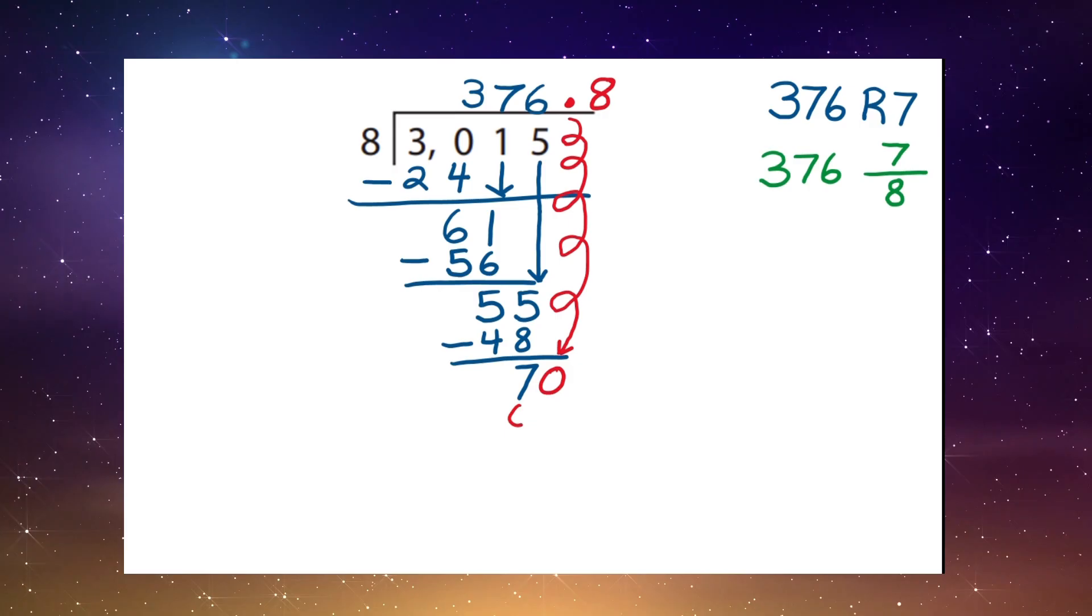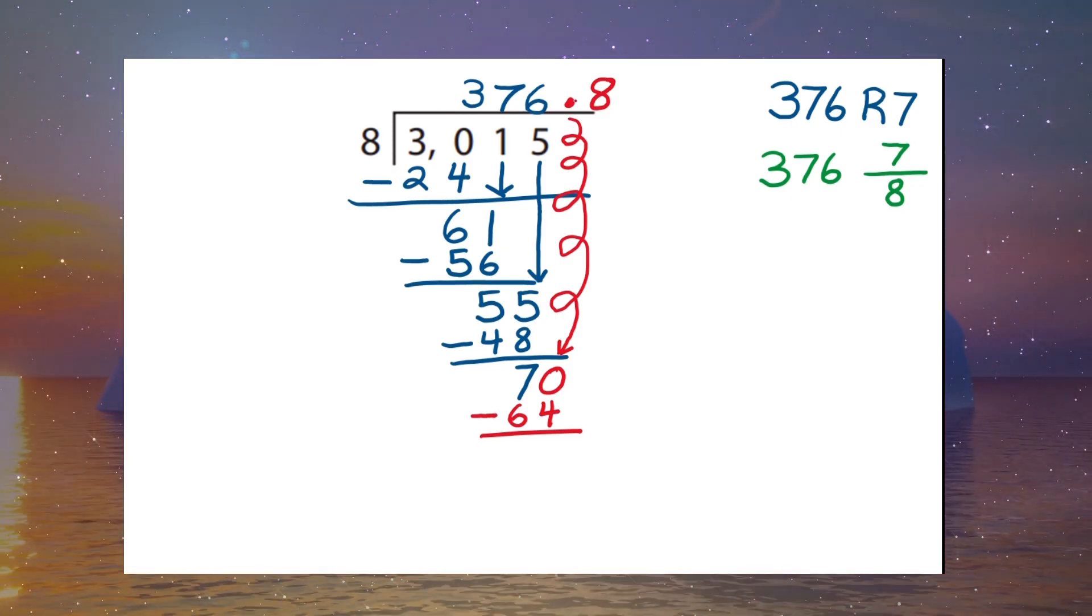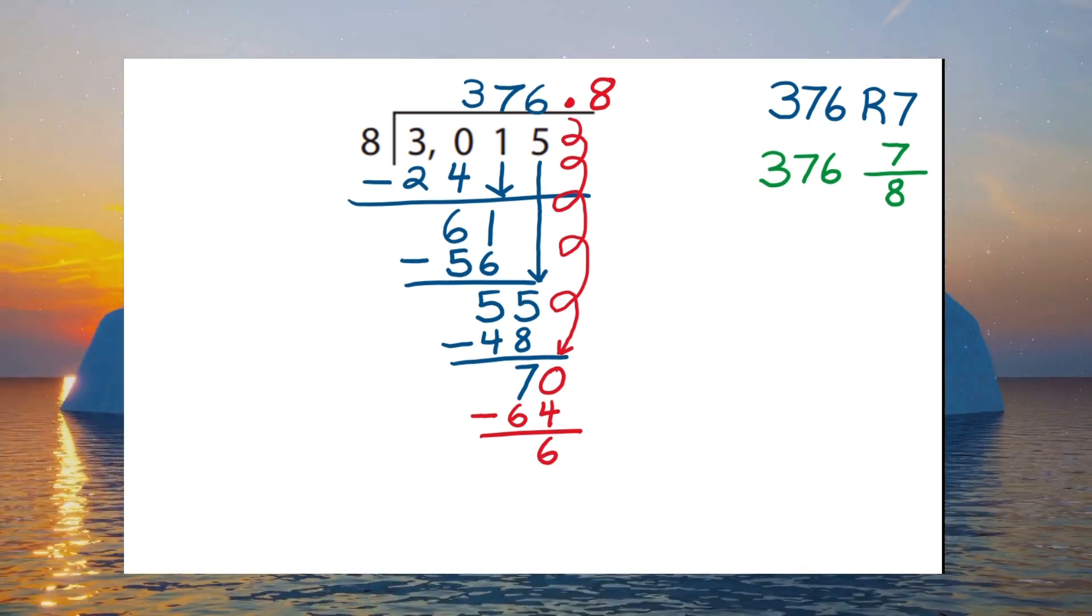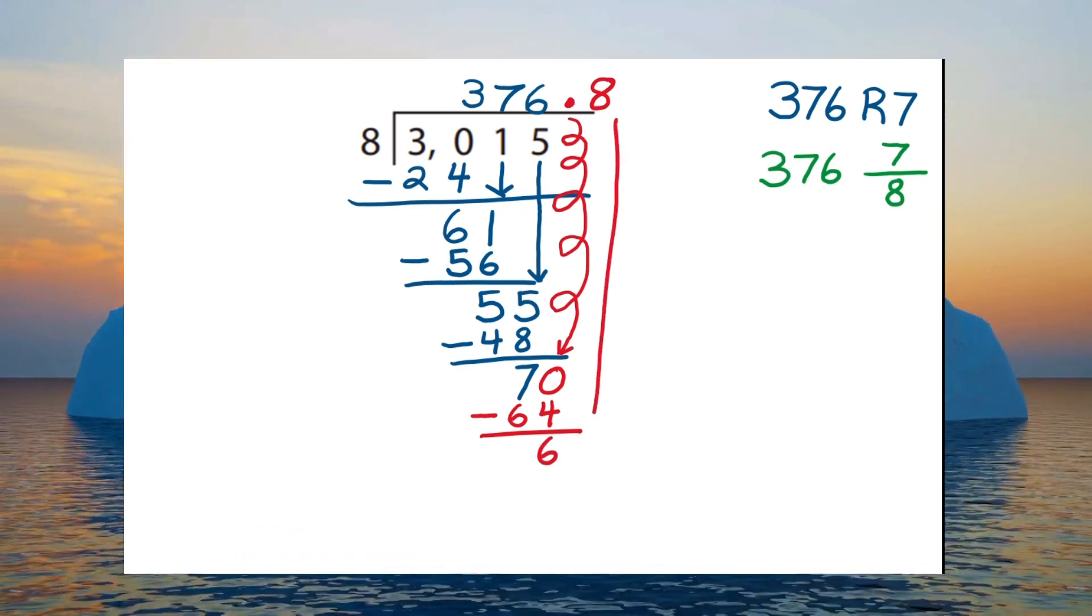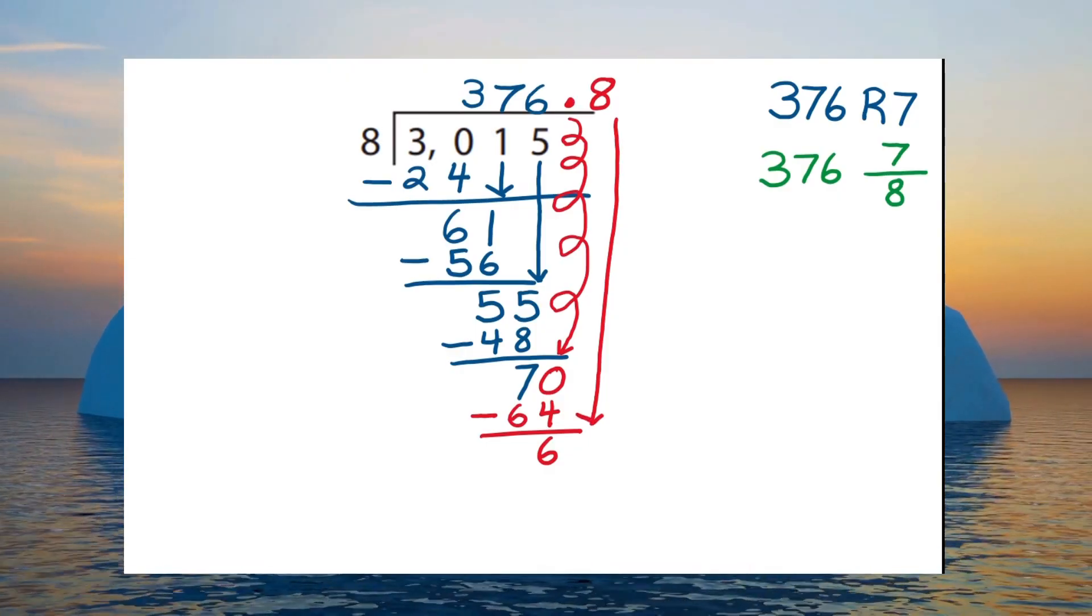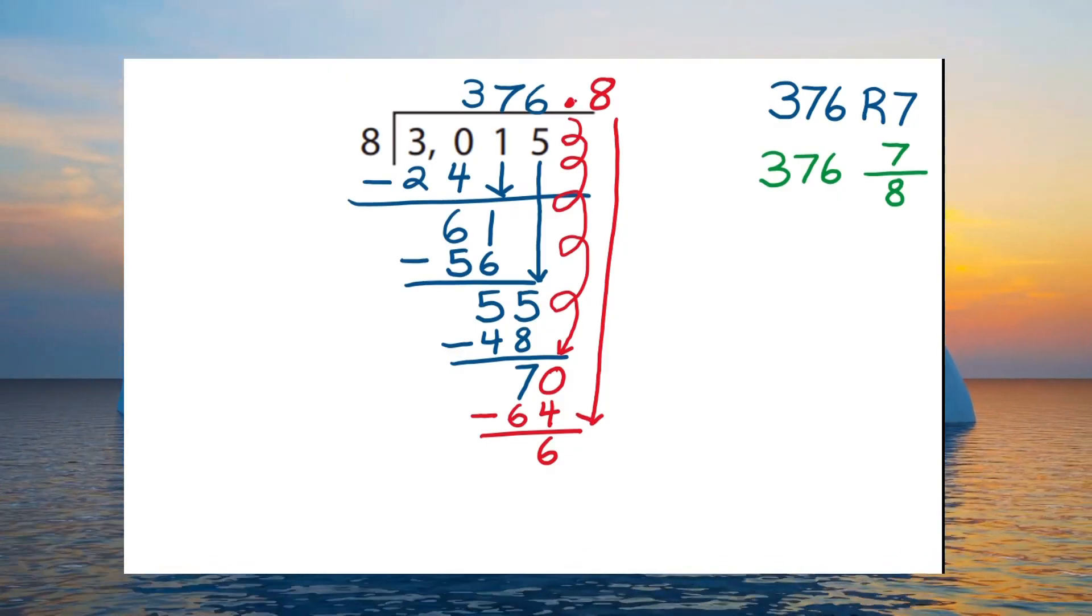And so we place the sixty-four below the seventy. And we do our subtraction. And we come up with a six. And we can bring down a zero, a zero that is a hero that may be invisible, but has always been there.